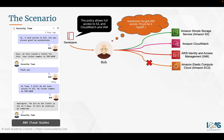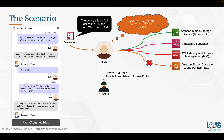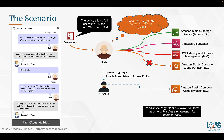Bob is going to give himself access to EC2 because he has full access to IAM. He wants to be a little clever about it — he doesn't want to attach the necessary permissions directly to his account. So he goes ahead and creates another account, a UserX account, and decides to grant UserX full administrative privileges. This means Bob can impersonate UserX and access the EC2 service to complete his personal task. Obviously, Bob has forgotten that everything he does is being recorded in CloudTrail, but that's a discussion for another video.